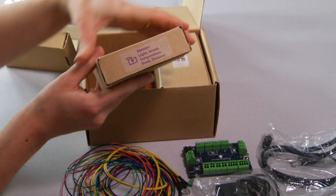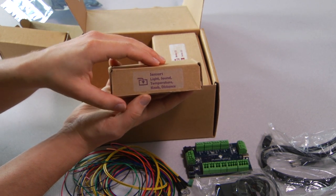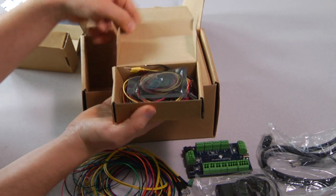Next up is the sensors kit. We have light, sound, temperature, and distance sensors as well as a rotary knob. So let me show you those.